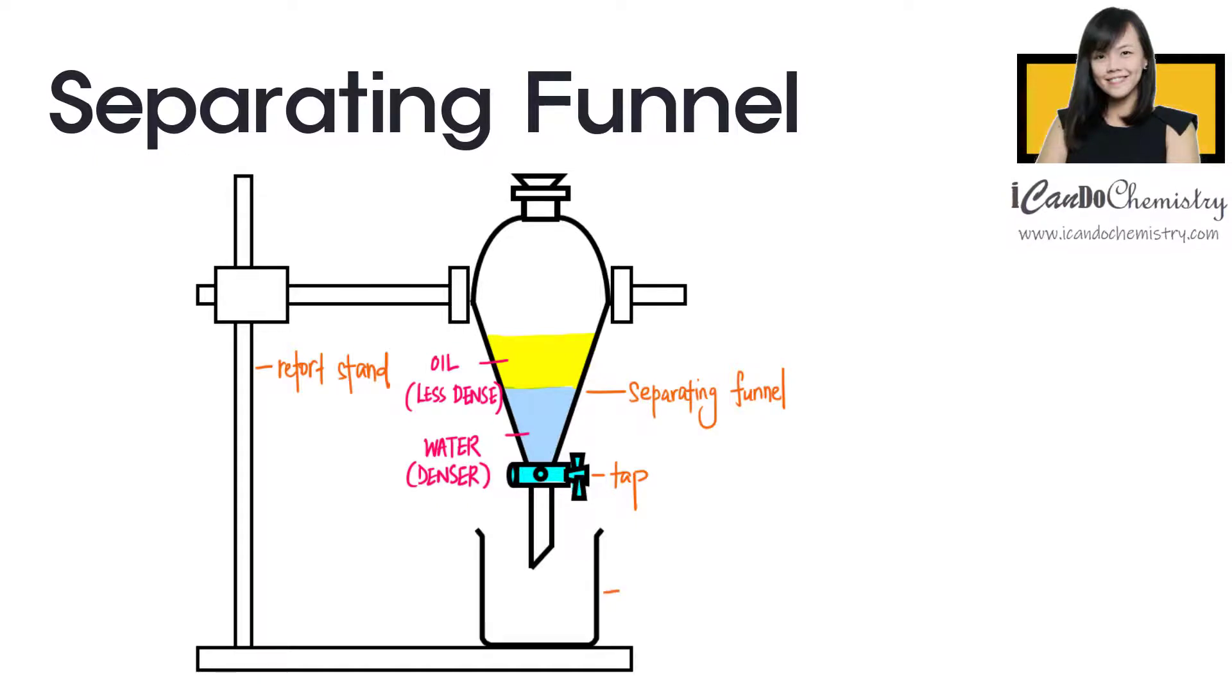Then we will place a clean beaker below the separating funnel. Open the tap to allow the bottom layer, which is water, to drain into the beaker.